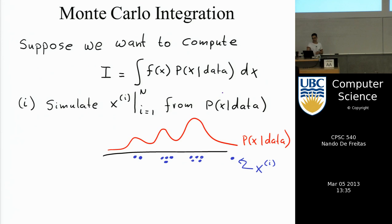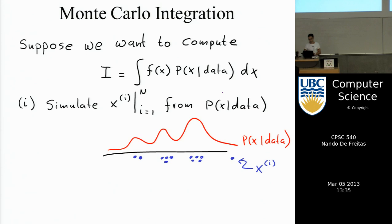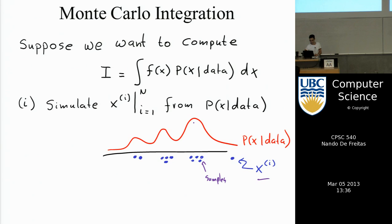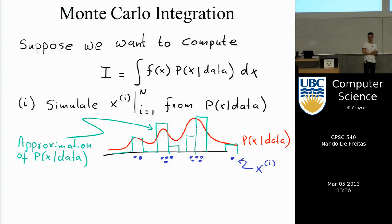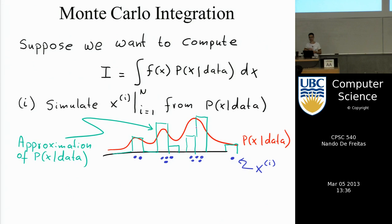If you had some arbitrary distribution p of x given data and drew samples from the posterior, simulating means you will draw more samples where there is higher probability. If you then use a histogram on those samples, you get an approximation of the true posterior. The more samples you draw, the better that estimate will be.